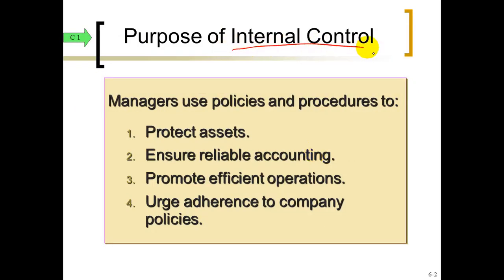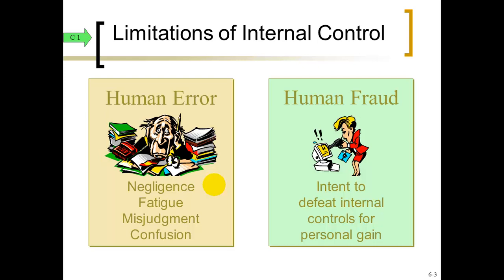So what's the purpose of internal control? To protect assets like cash in chapter 6, and to make sure we have accurate, reliable accounting records and accurate financial statements that we're learning to prepare throughout the semester. We also want to promote efficiency — more so in Accounting 202 — to make sure we're using our assets effectively and efficiently. We want our employees to adhere to internal control policies and procedures.